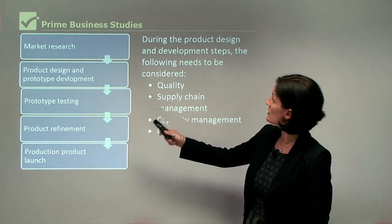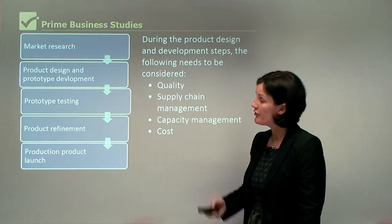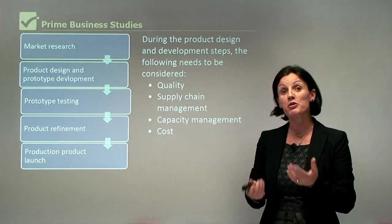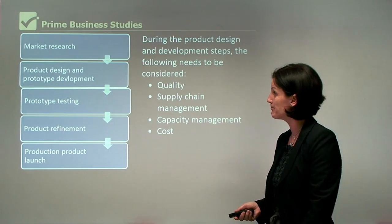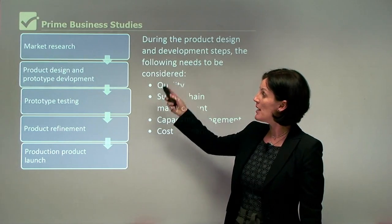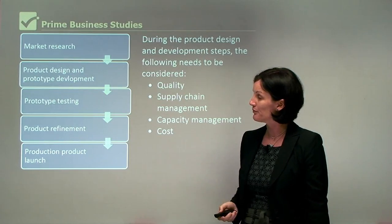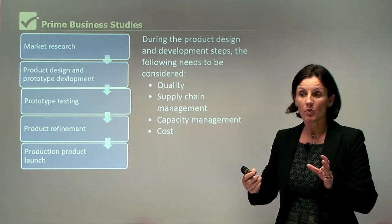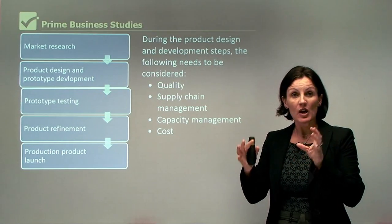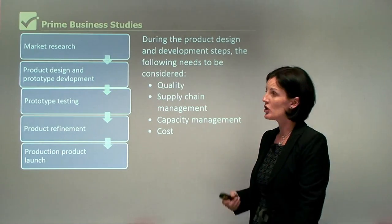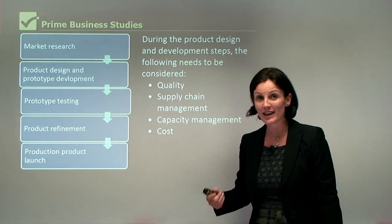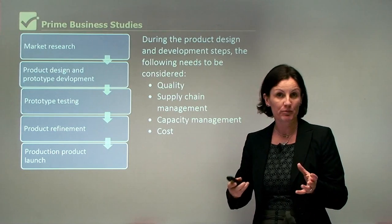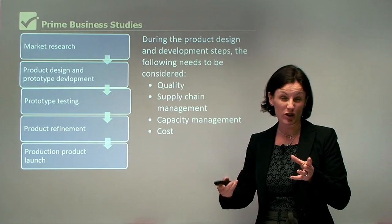These are the product design and development steps. First of all we do market research — we find out what people want or what people think about certain products. We then move to design and prototype development, meaning we design a product and come up with a prototype to show a consumer. Using computer-aided design, CAD technology, you can actually show this on a computer screen without always making a physical prototype.